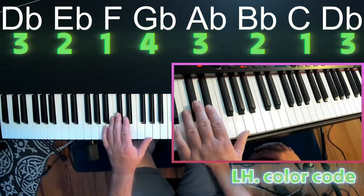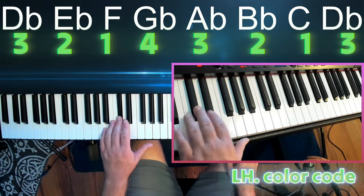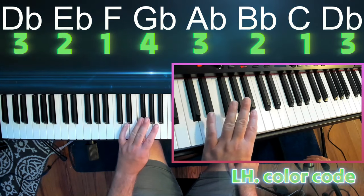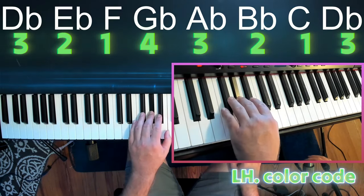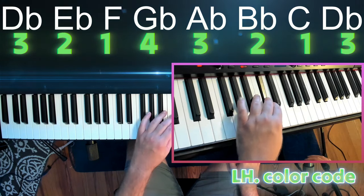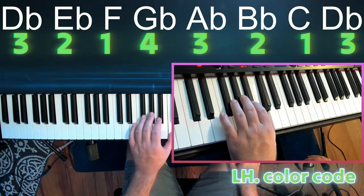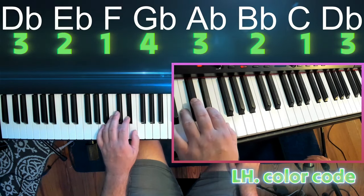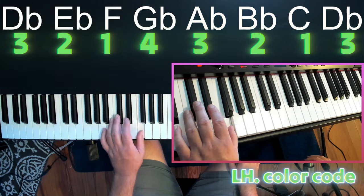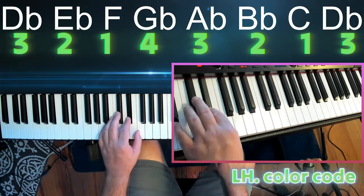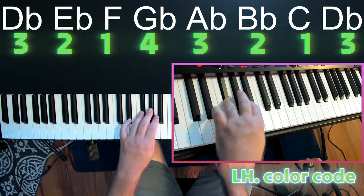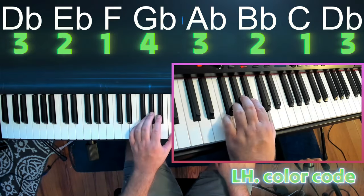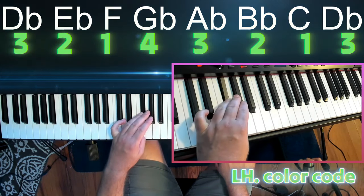So we have our third finger on D-flat, two, one, four. So what's cool is you have that thumb. The thumb is just hanging out again, and the thumbs are always on the white keys. You can pause the screen so you can look at the fingering and practice if that helps you.